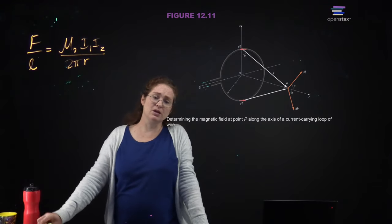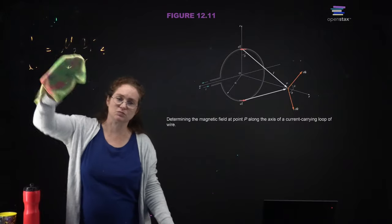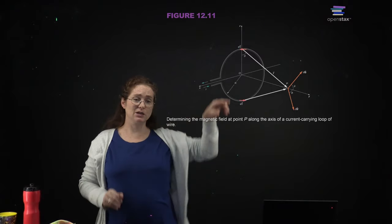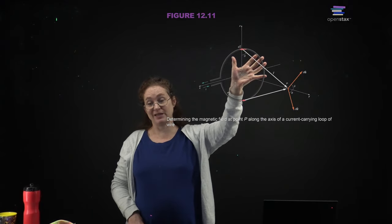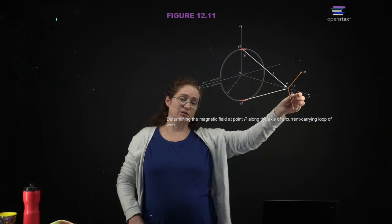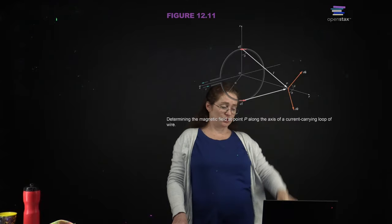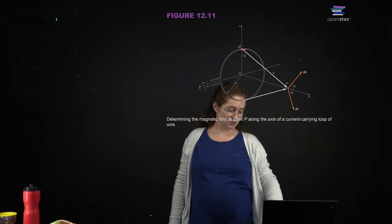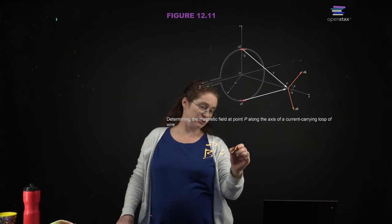Determining the magnetic field at a point P along the axis of a current-carrying loop of wire — what we would do here is use the Biot-Savart law and put the loop in one plane, then calculate the magnetic field above that, and calculate each of the different elements by doing the integral over the whole loop. In the interest of time I will simply write down the answer.